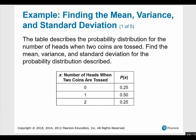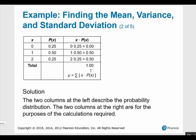The table describes the probability distribution for the number of heads when two coins are tossed. Find the mean, variance, and standard deviation. We've already identified this as a valid probability distribution. To calculate the mean, we list the x values and their corresponding P(x) values, multiply them together, and add them up. For the standard deviation, we use the formula: sigma equals the square root of the summation of x squared times P(x) minus mu squared. Make sure to use an unrounded version of mu when plugging it into the formula.